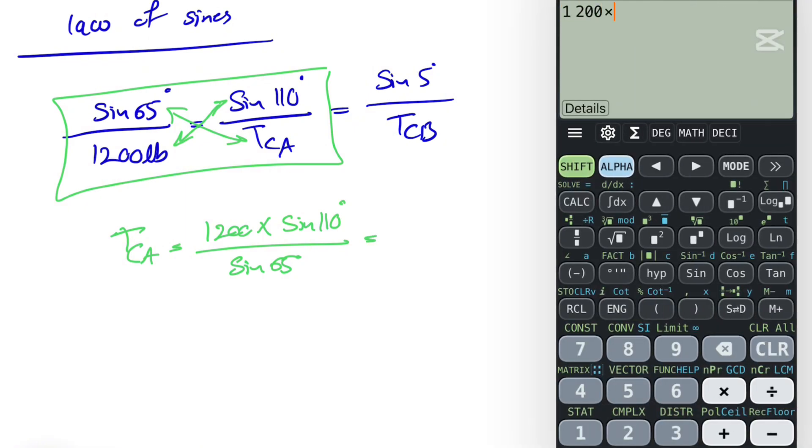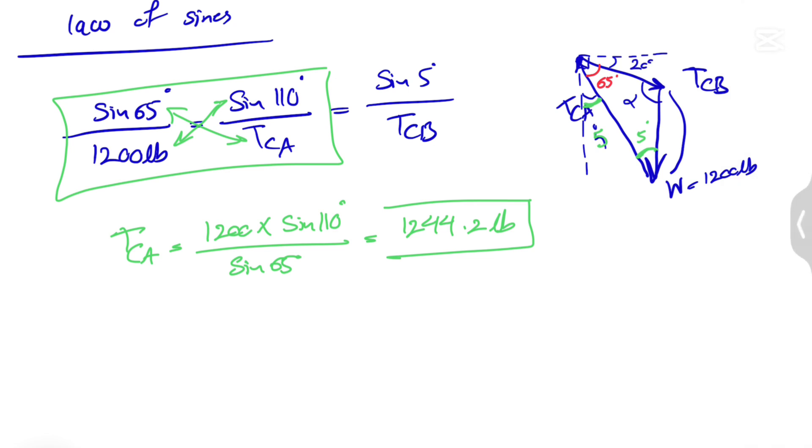So we're going to have 1200 times sine of 110 divided by sine of 65. That's going to be 1244.2 pounds, or one of the unknowns that we have.